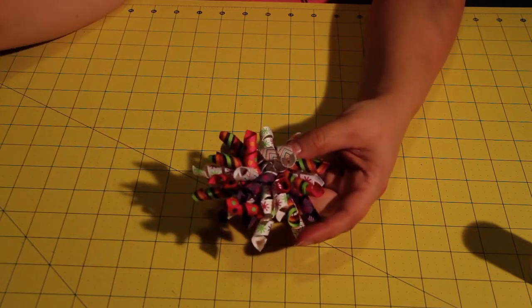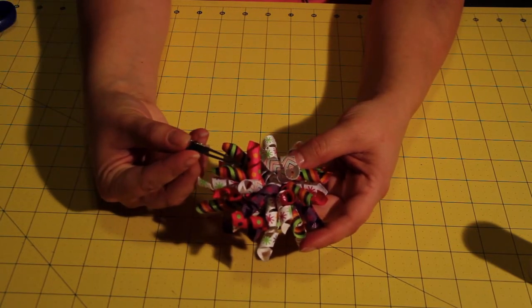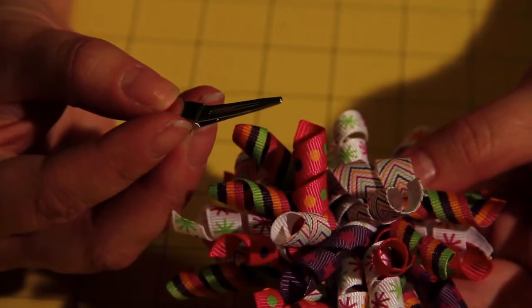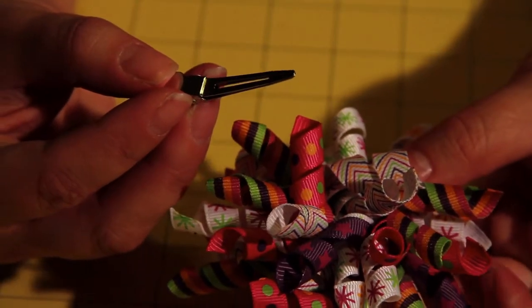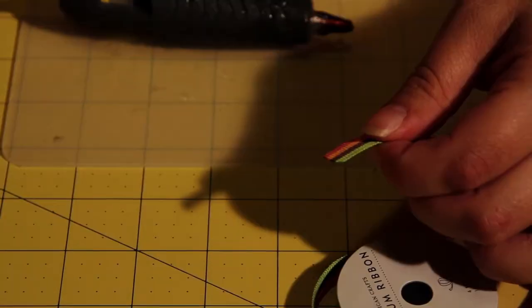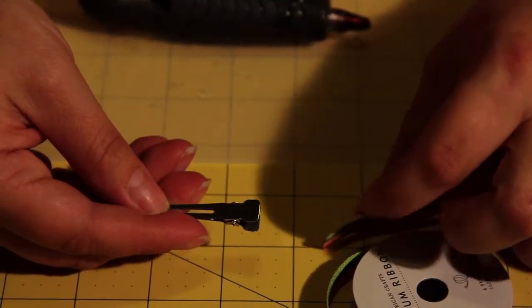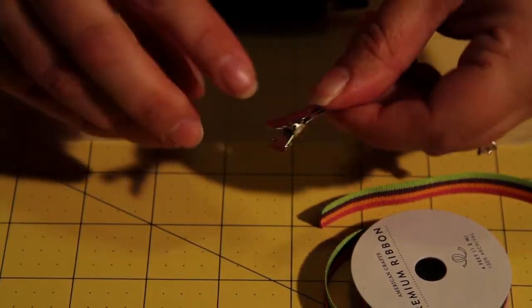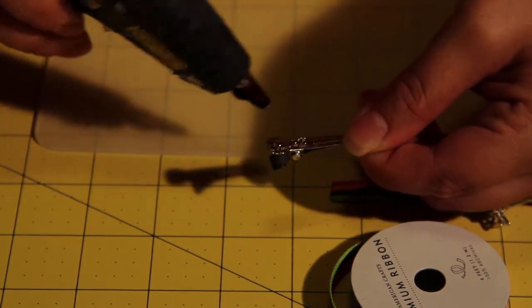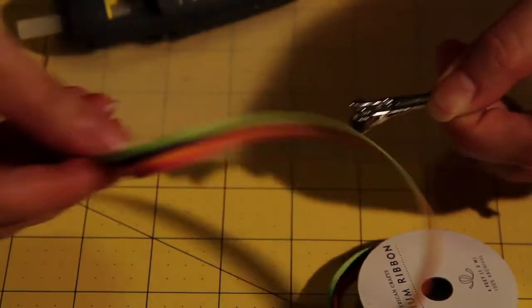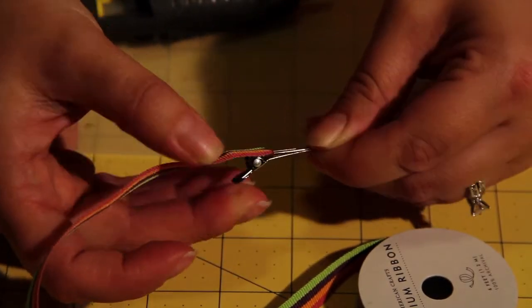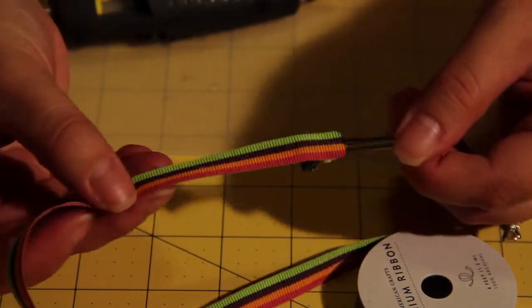Now I am going to show you how to attach the alligator clip. But before I do that I am actually going to show you how I decorate the clip prior to attaching the bow. So I have picked a piece of ribbon that I used in my bow. And then with the alligator clip I am going to put a piece of glue right here on the back. It does not take much. And I am going to attach the ribbon. So it looks like this.